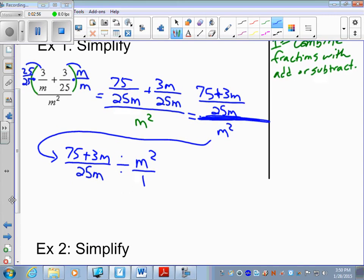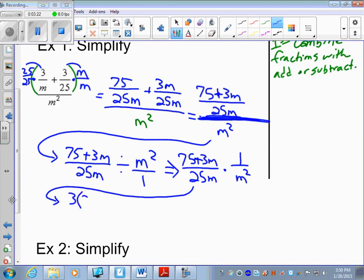I'm going to change this to 75 plus 3m over 25m, keep it change flip. Now we factor every numerator and denominator separately, what you did in 6d part 2. The first 75 plus 3m, I can factor out a 3. Everything else is monomial, so I cannot factor it.